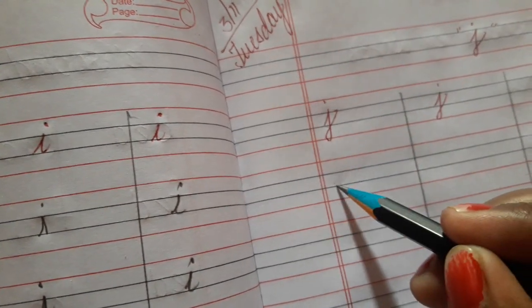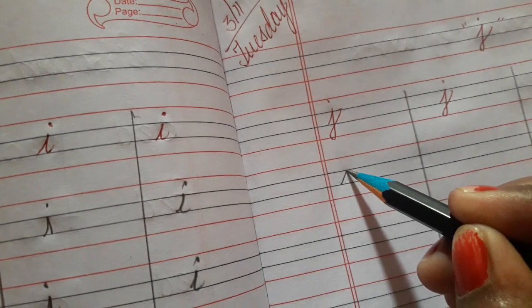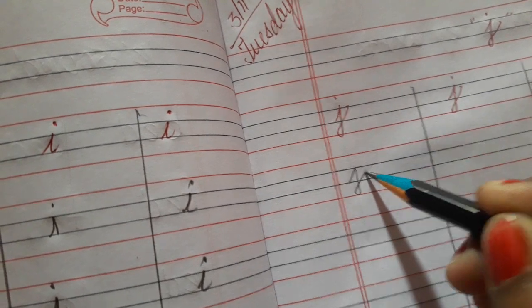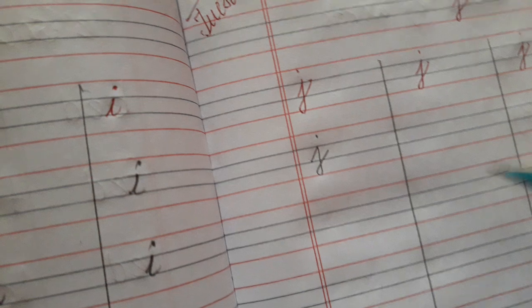See here how to write. Start from 2nd blue line. Go up. Come down. And make curve. Put a dot on top. Okay, dot.